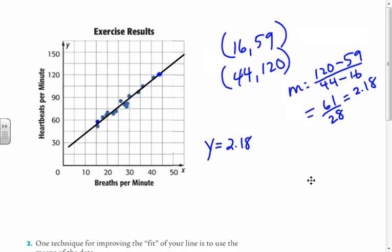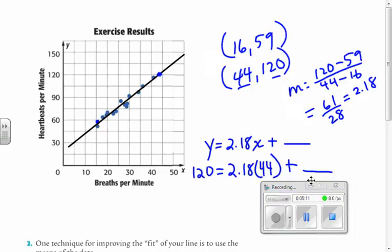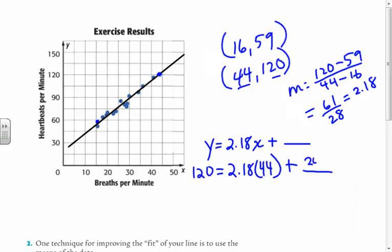So now I have my slope. My equation is going to be y equals 2.18x plus something. Then I'm just going to use one of these pieces of data to get the rest of it. Y has to be 120 when x is 44. So I'm going to multiply 2.18 times 44 to figure out my y-intercept. And that's 24.08.